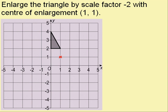Now what I need to do is choose a corner of my triangle. I'm going to pick this one here and I need to write a column vector to get from the centre of enlargement to that corner. So I can see that I don't go across at all, I just go up 1. So the column vector is 0,1.